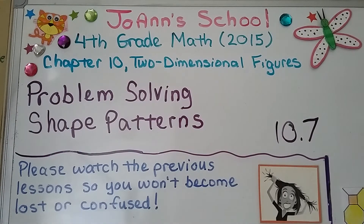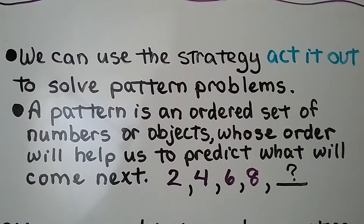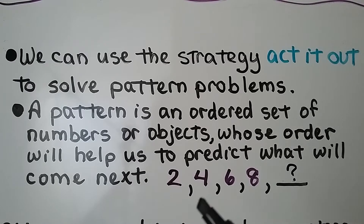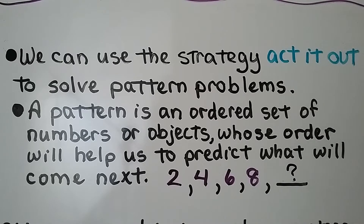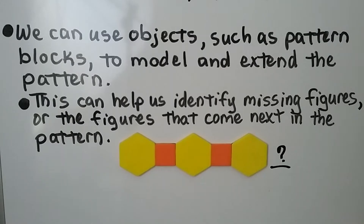Lesson 10.7: Problem Solving with Shape Patterns. We can use the strategy 'act it out' to solve pattern problems. A pattern is an ordered set of numbers or objects whose order helps us predict what comes next. With the numbers 2, 4, 6, 8, there is skip counting by two, so the next number would be ten. The order helped us predict what comes next.